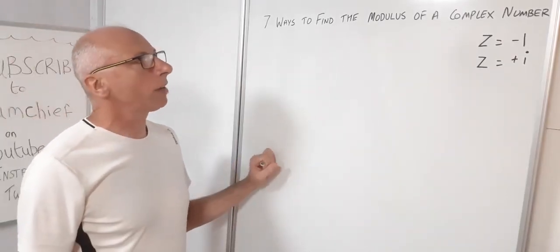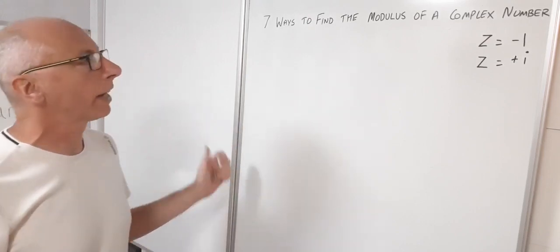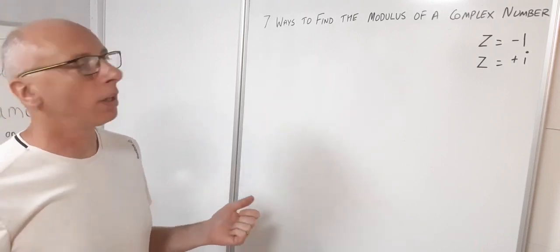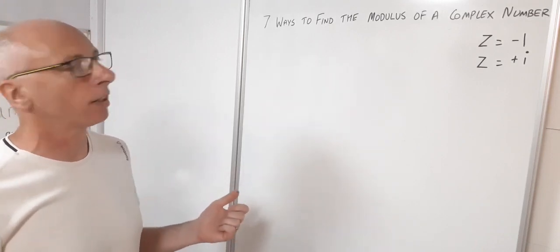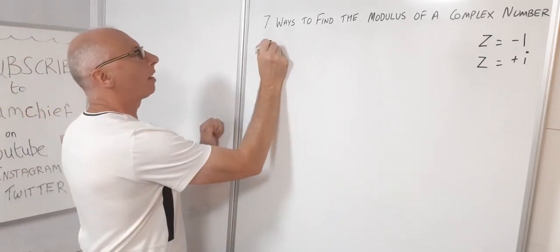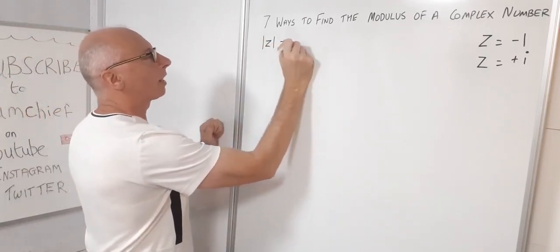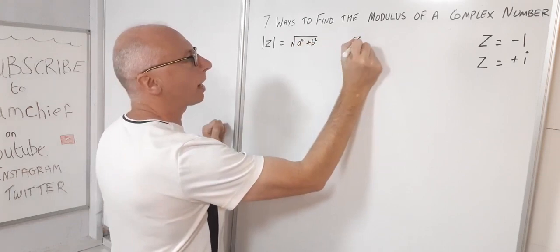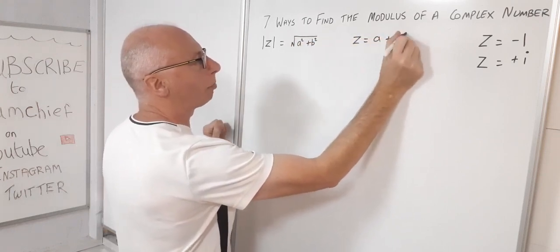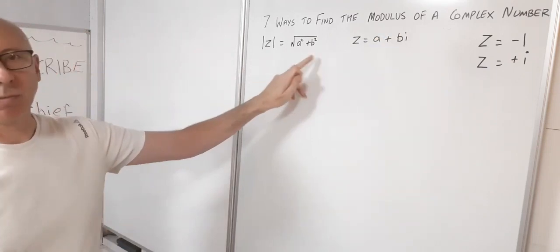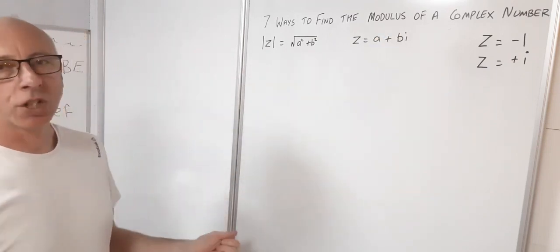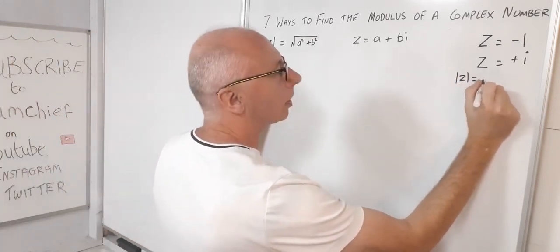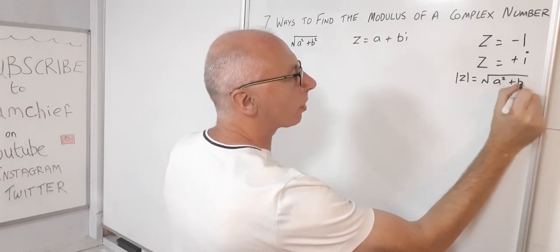In this video I'm going to show you seven ways to find the modulus of a complex number. We've all been told the basic way from our first class in complex analysis: the modulus of z equals the square root of a squared plus b squared, where z equals a plus bi. That's the standard one, and I'm going to show you seven more.